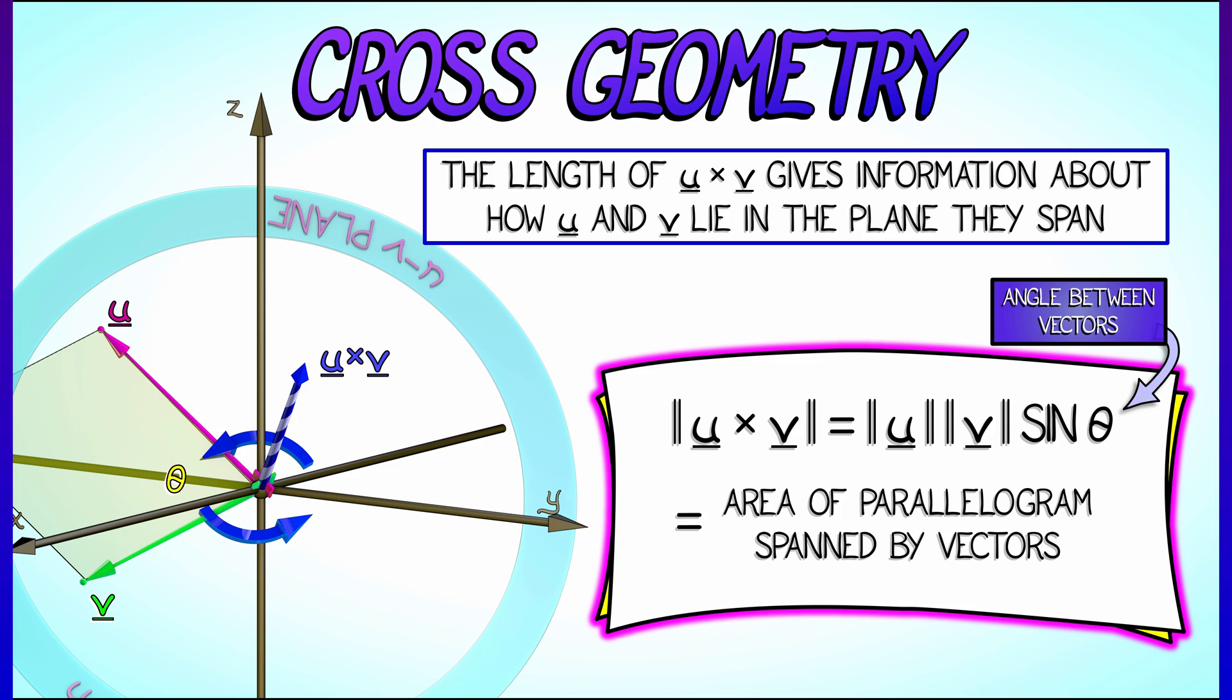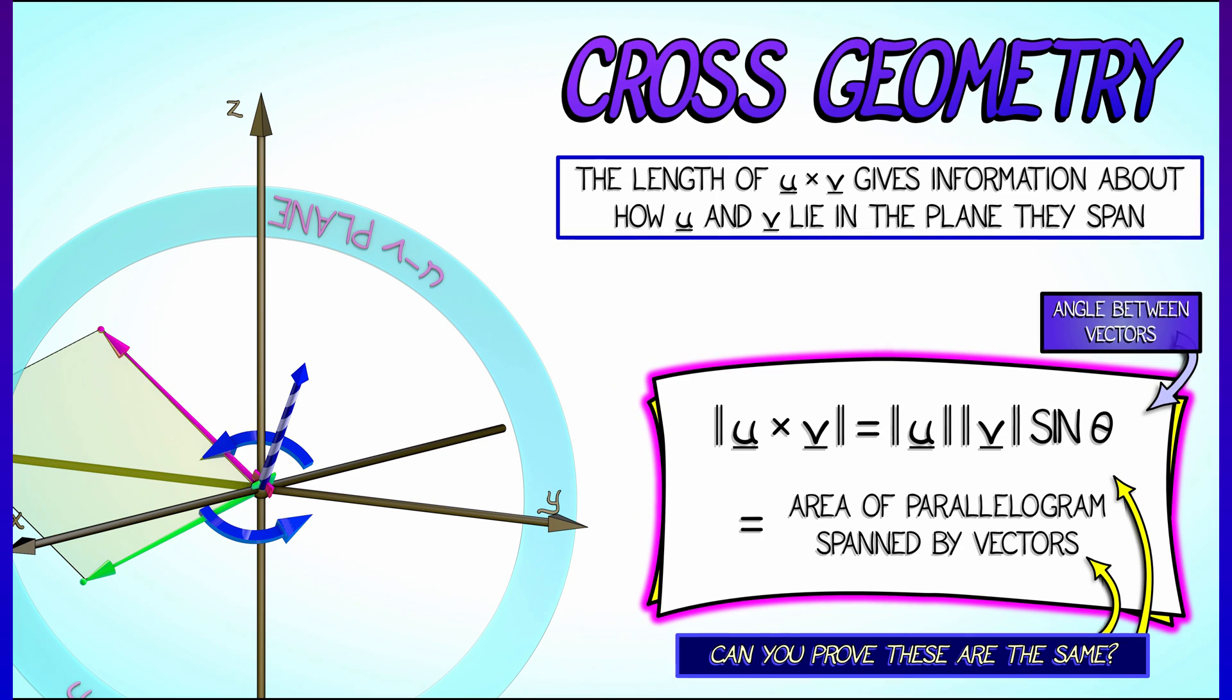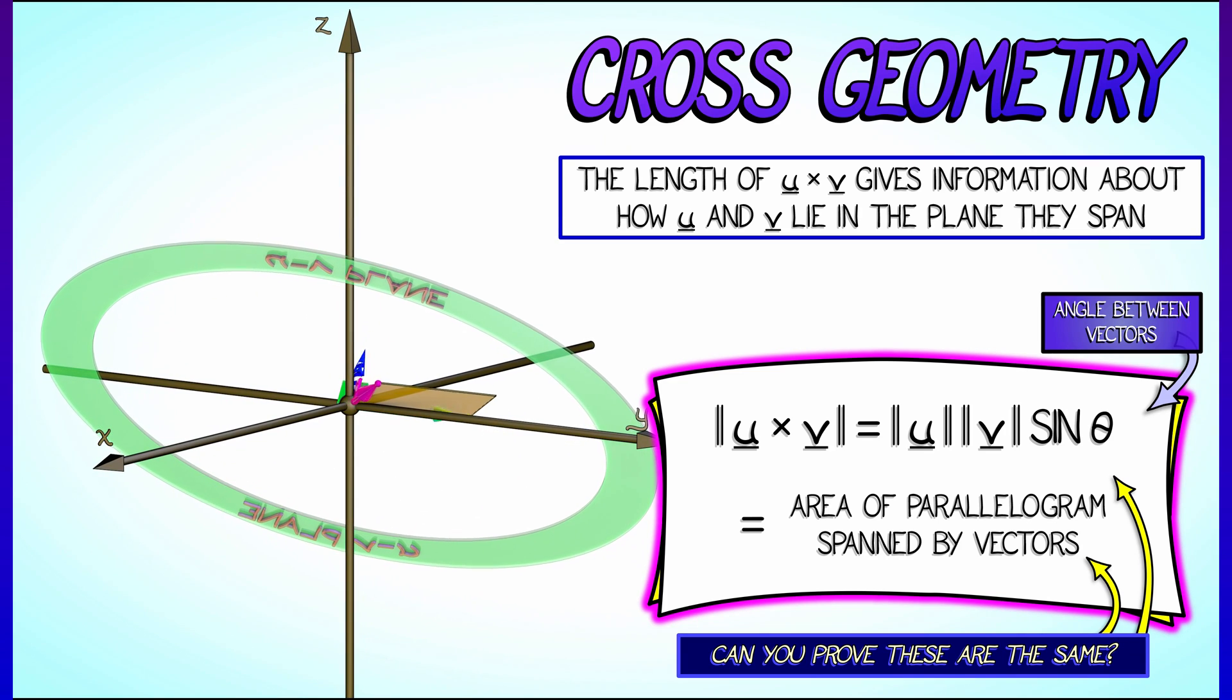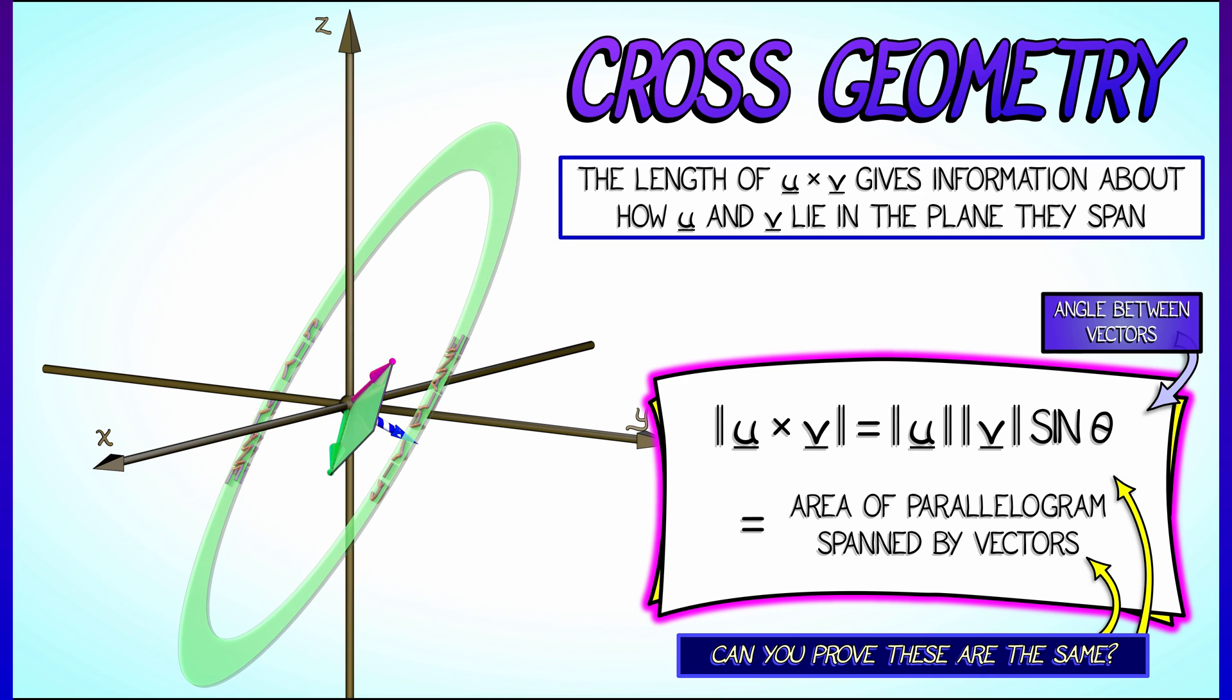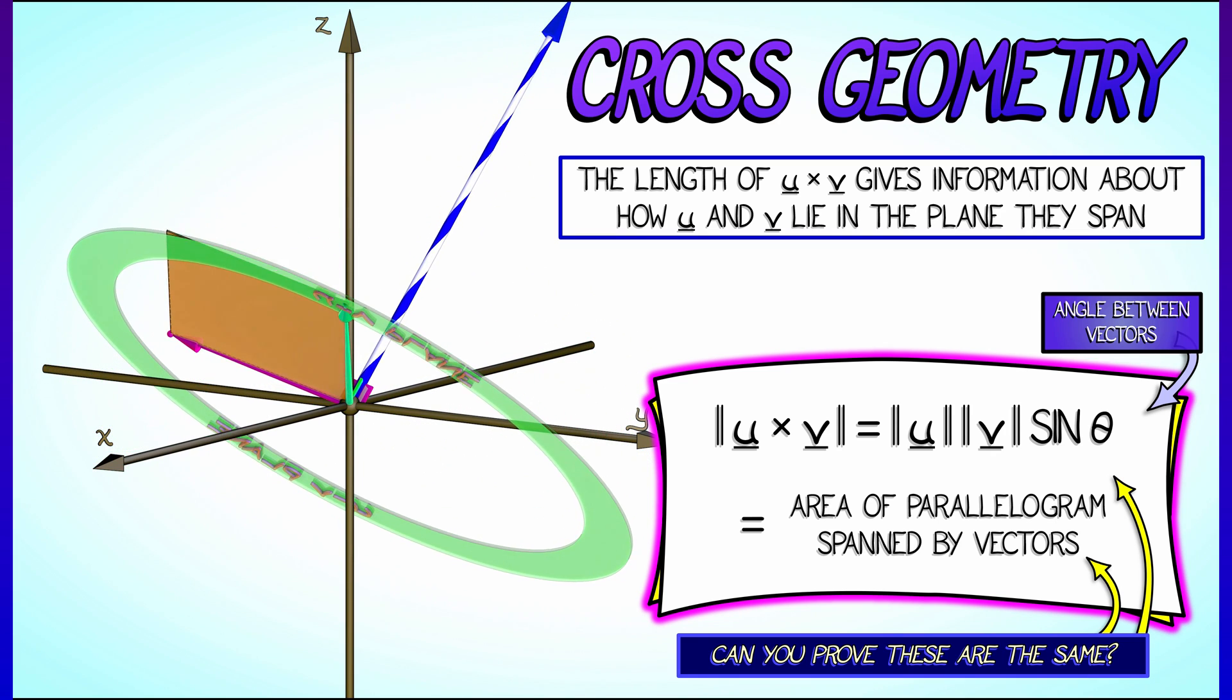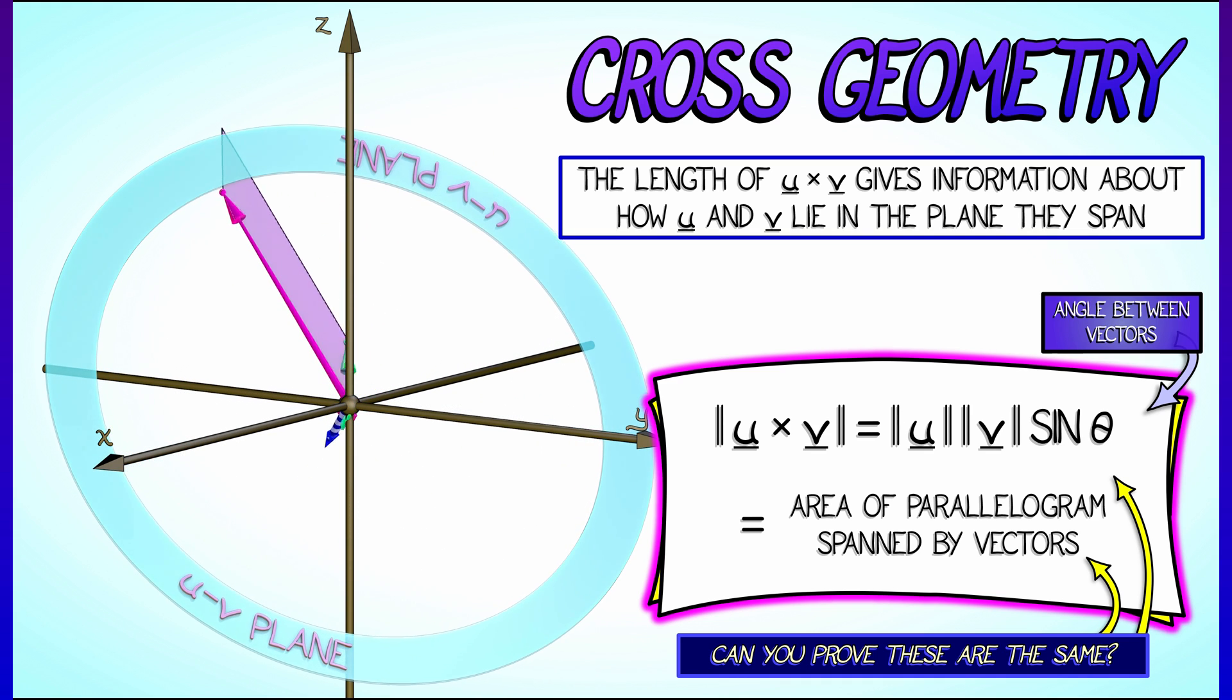...is also the area of the parallelogram that is spanned by those two vectors. Now, you might want to have a little bit of fun trying to prove that this is exactly what the area is. That's a fun little geometry problem, but I very strongly recommend using this formula to bolster your intuition for what the cross product vector really looks like. We know it's orthogonal to that u v plane, but now its length and its direction both have geometric meaning.